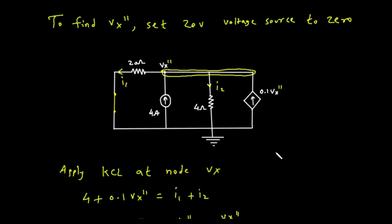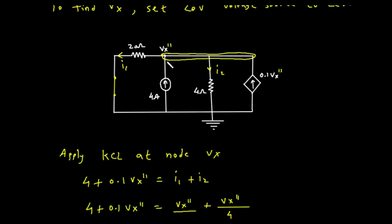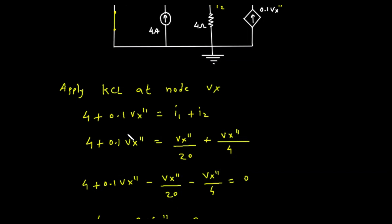We will apply KCL at the node where the voltage is Vx double prime. The currents entering this node are from the 4 amp source and the dependent source, so the total current entering is 4 plus 0.1 Vx double prime. The currents leaving the node are I1, which flows to the left through the resistor, and I2, which flows down through the 4 ohm resistor. Our KCL equation is: 4 plus 0.1 Vx double prime equals I1 plus I2.